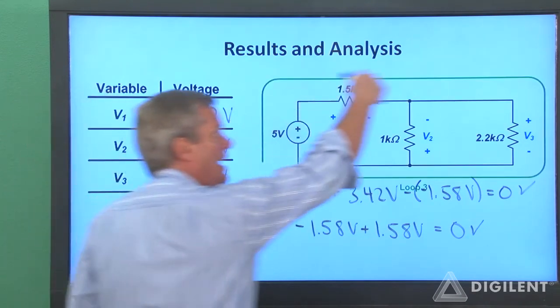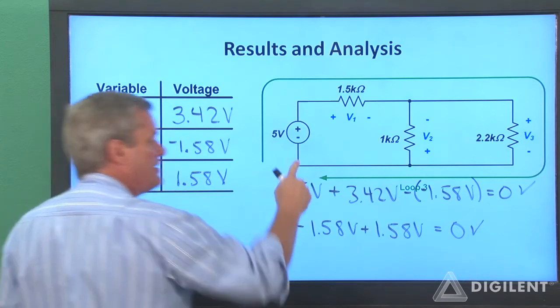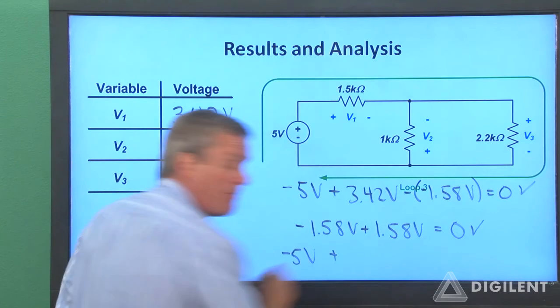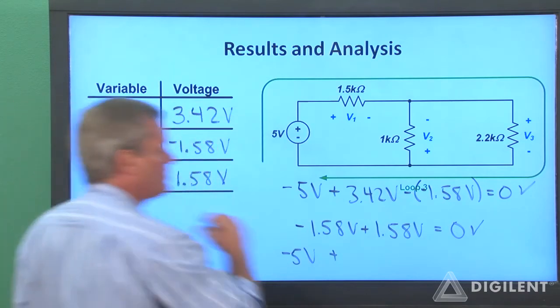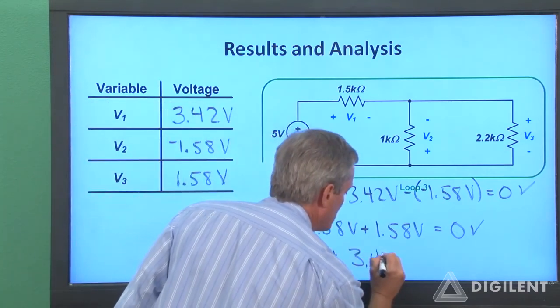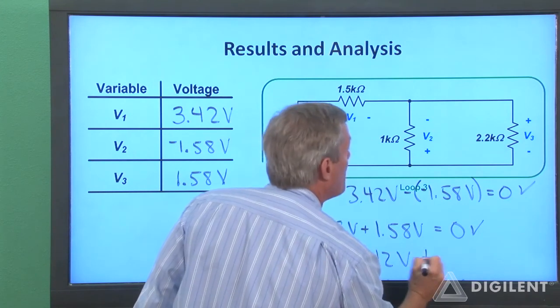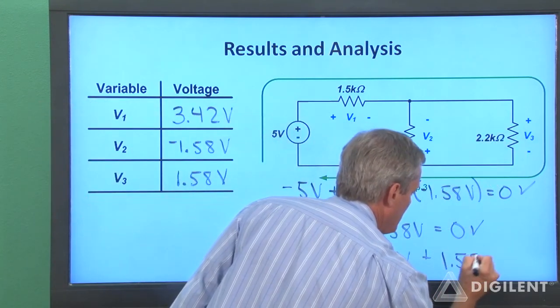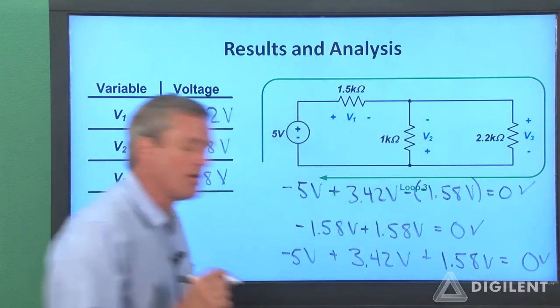Finally, the last outer loop, if I start down here, I see the negative terminal on the 5-volt source first, so minus 5 volts, plus V1, which is 3.42 volts, plus V3, which is a positive 1.58 volts. That also sums up to zero.